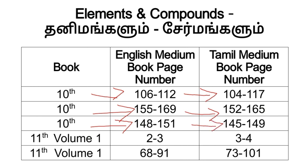Next is the 11th Volume 1 Chemistry book. For Elements and Compounds, the English Medium book is pages 2 and 3, and the Tamil Medium book is pages 3 and 4. For Periodic Classification of Elements in the 11th Volume 1 book, English Medium is page number 68 to 91, and Tamil Medium is page number 73 to 101.